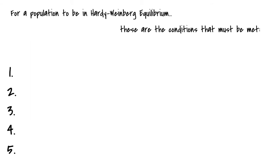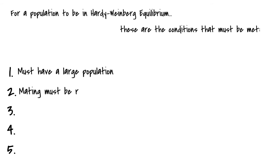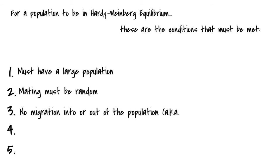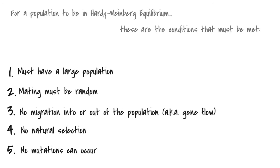Number one, you must have a large population. Number two, mating must be random. Number three, no migration into or out of the population, also known as gene flow. Number four, no natural selection. And number five, no mutations can occur.